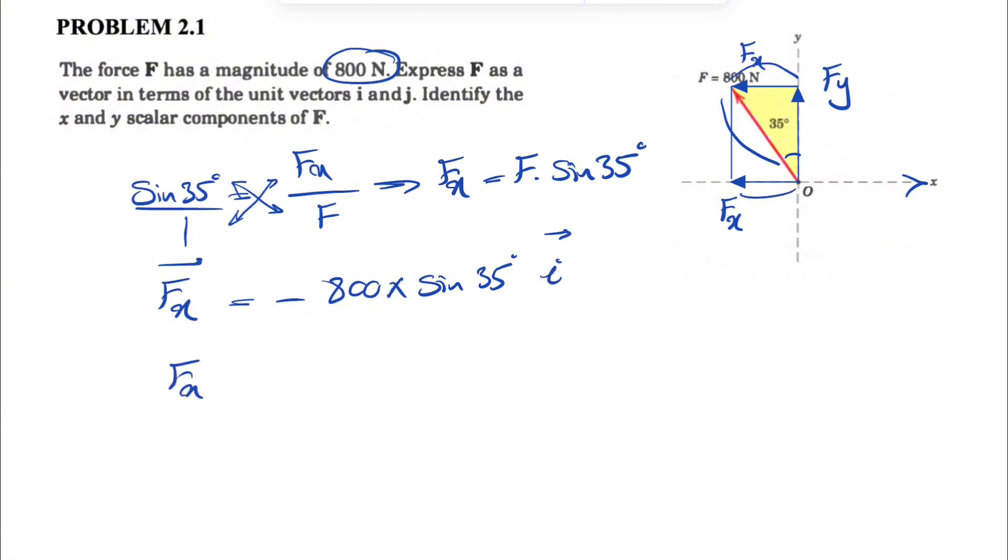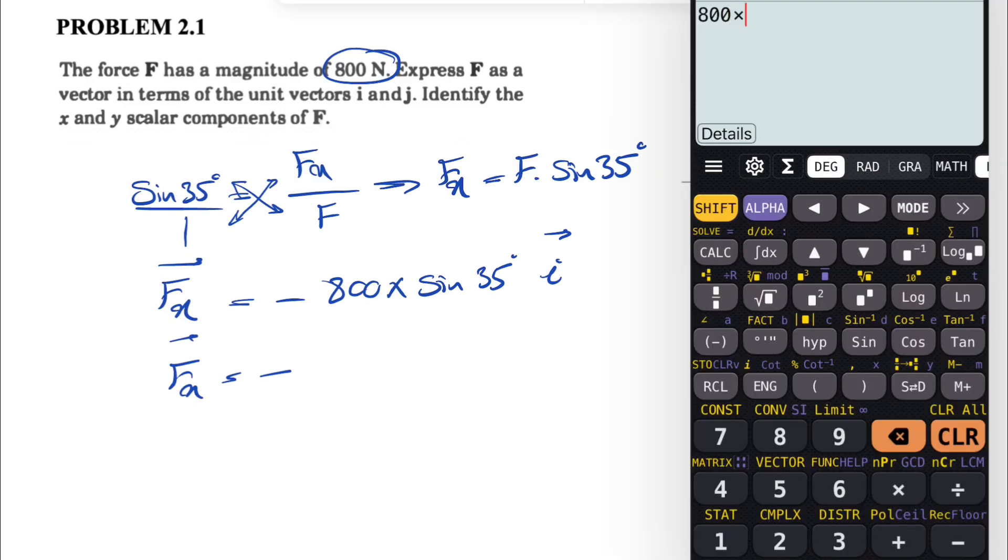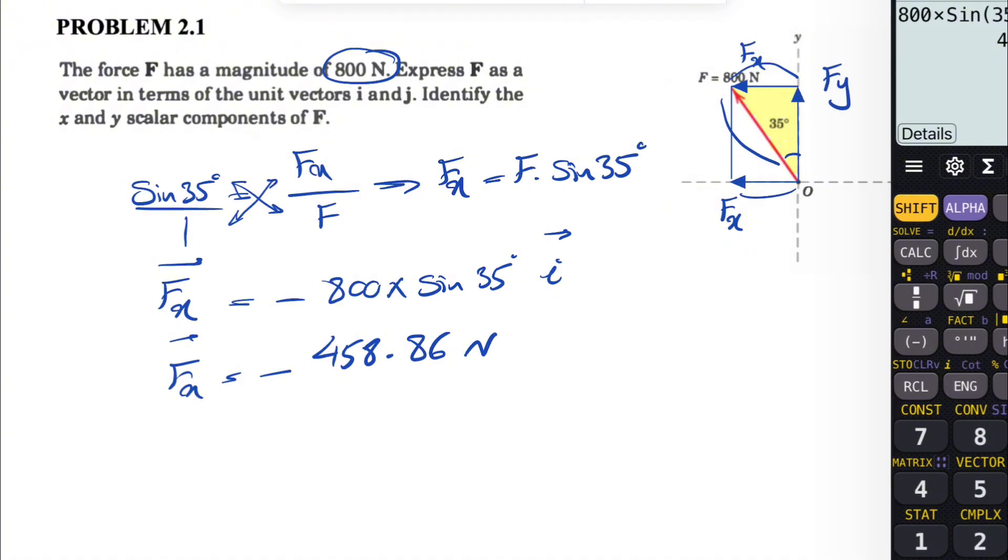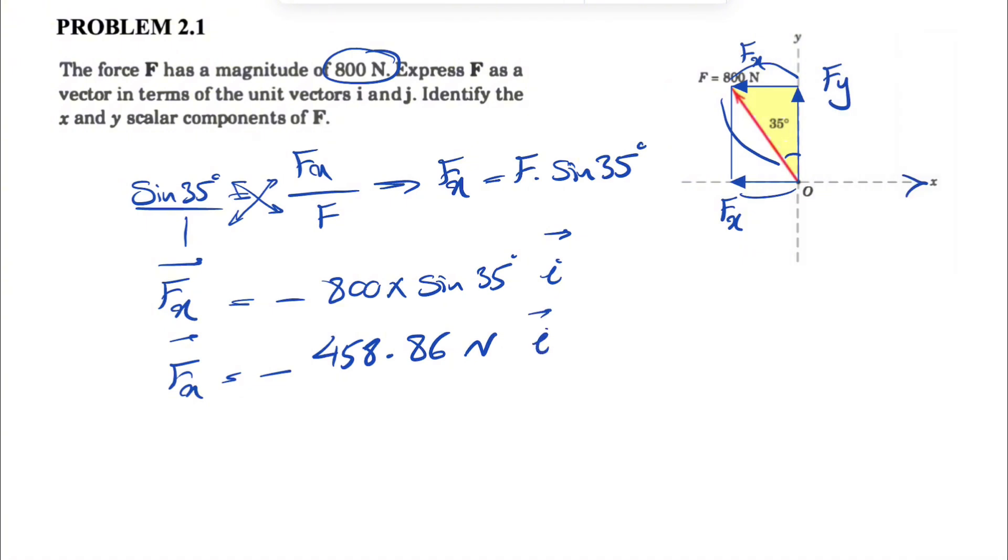Our Fx would be negative 800 times sine of 35. Let's calculate that. 800 times sine of 35 is going to be 458.86 newtons, and the unit vector would be i.